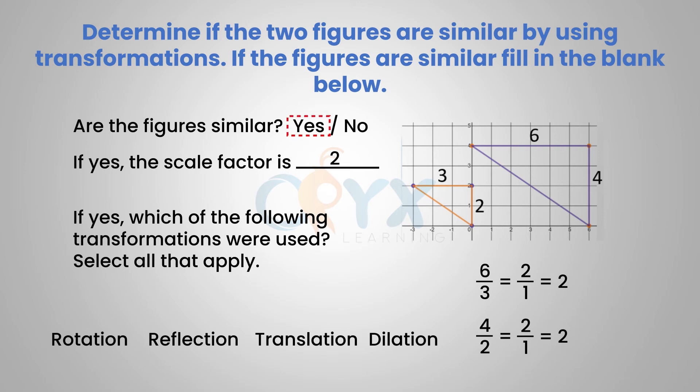If yes, which of the following transformations were used? Select all that apply. In order to get from the orange triangle to the purple triangle, we would first have to translate it to the right and up. As you can see, the orange triangle is smaller than the purple triangle, so it would also need to be dilated. To get from the orange figure to the purple figure, we need a translation and a dilation.